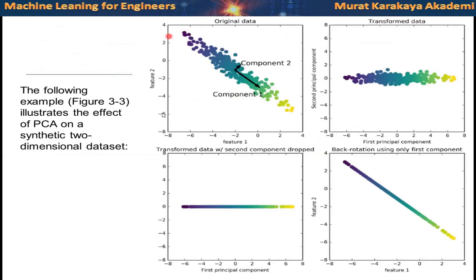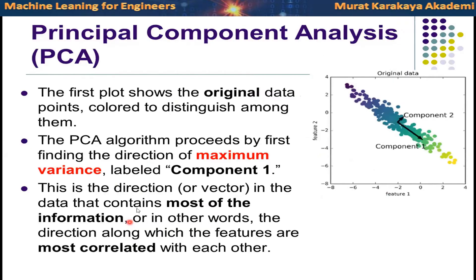Assume that the left side is our original data. We convert it and then analyze it. This is the original data with feature one and feature two. According to the values of feature one and feature two, each of them is a data point in the space. The colors are not the classes of the points — they are just showing each data point in the space, just to follow the rotation.